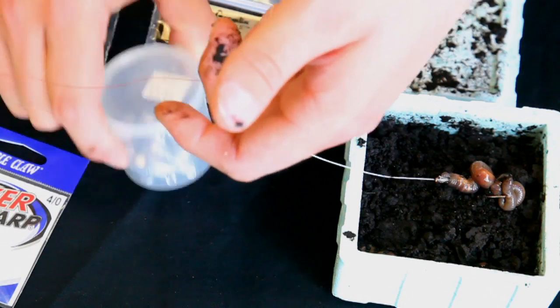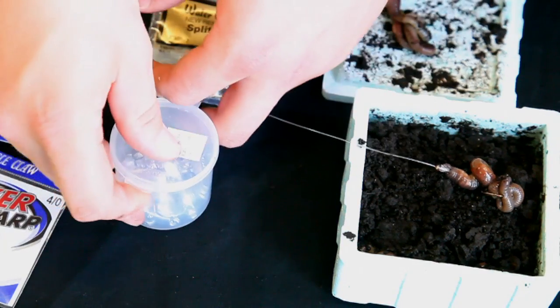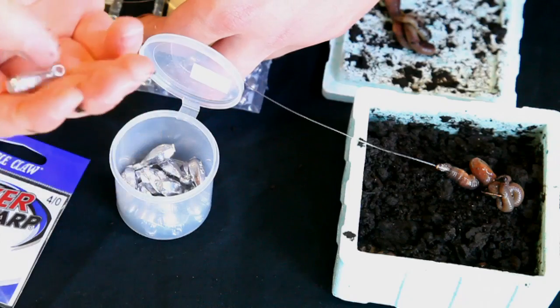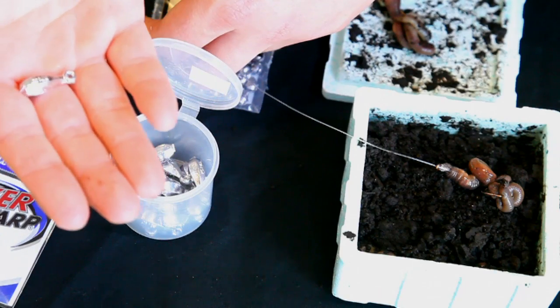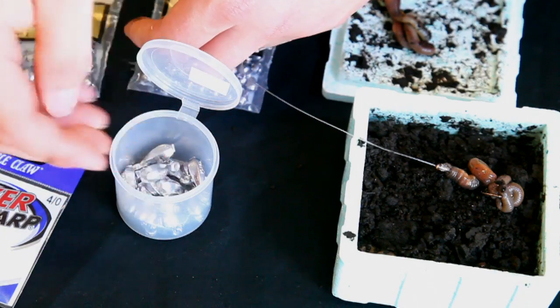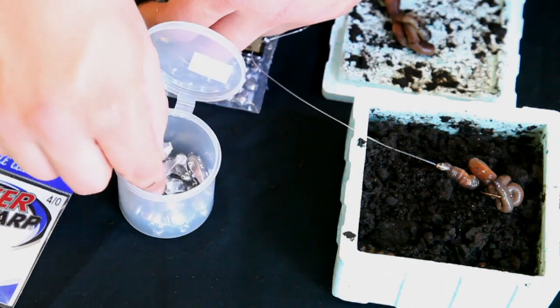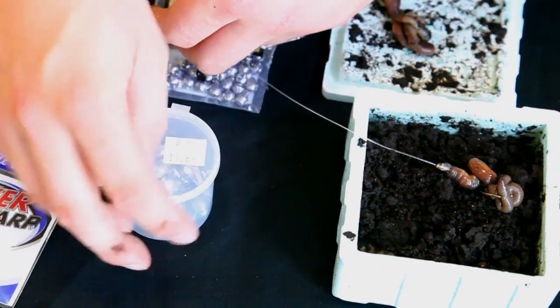We have different kinds. We have weights that don't clamp on, but you have to tie on to your line. Those come in multiple sizes everywhere from three-eighths all the way up to a five-ounce weight.